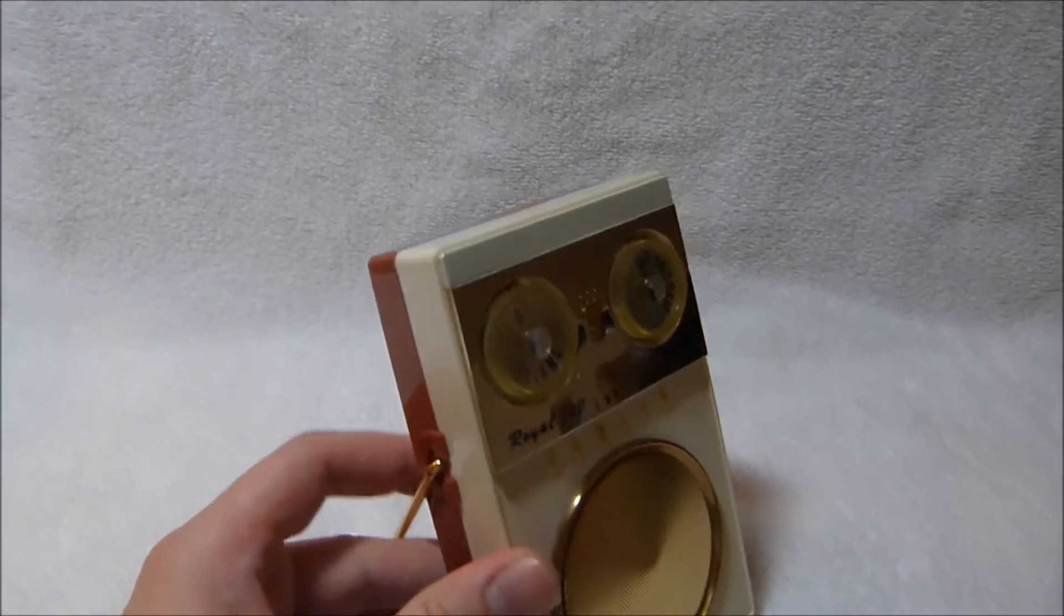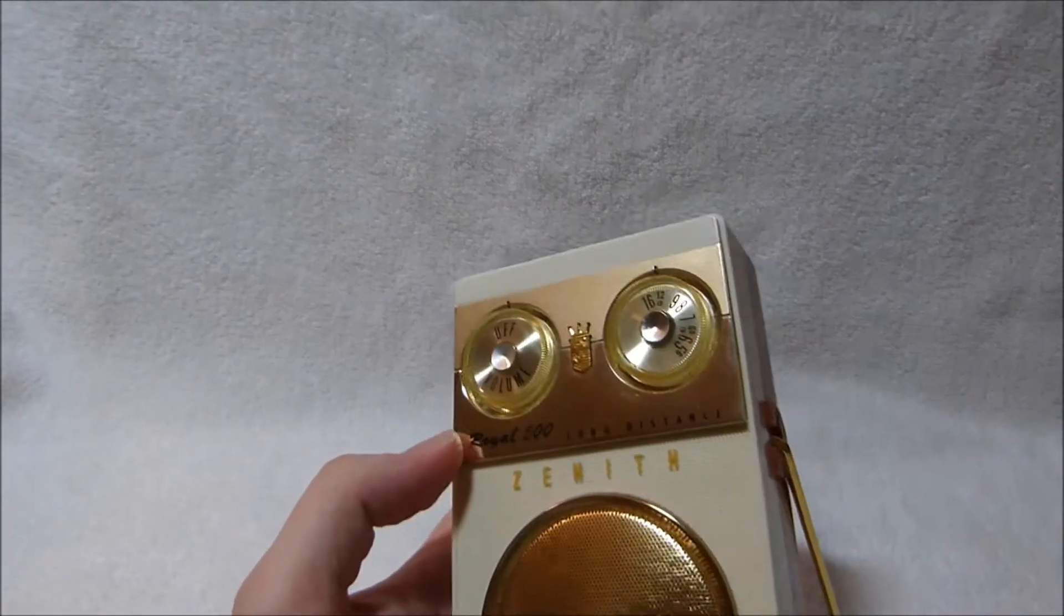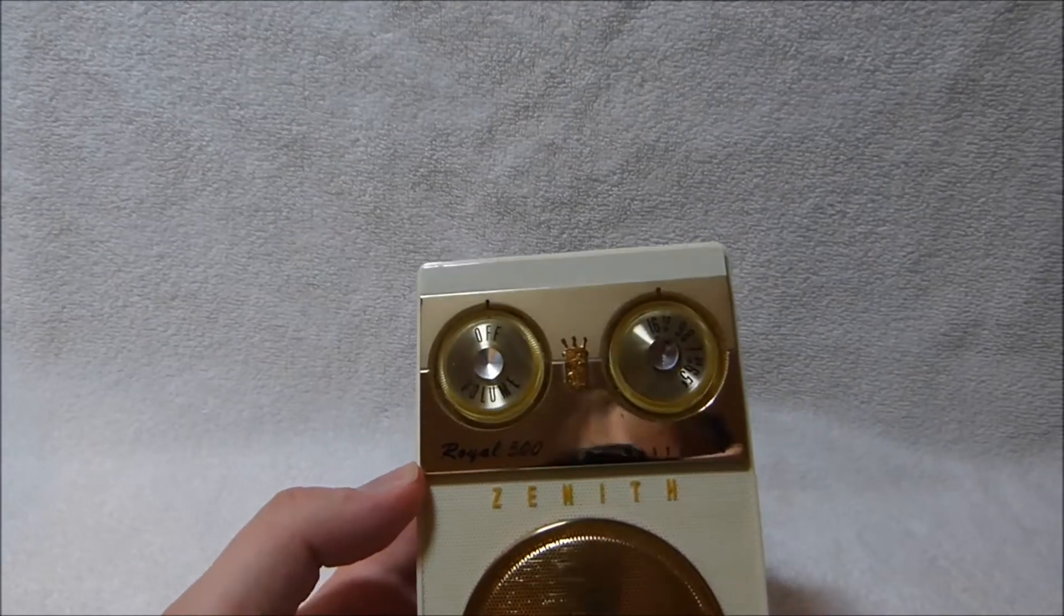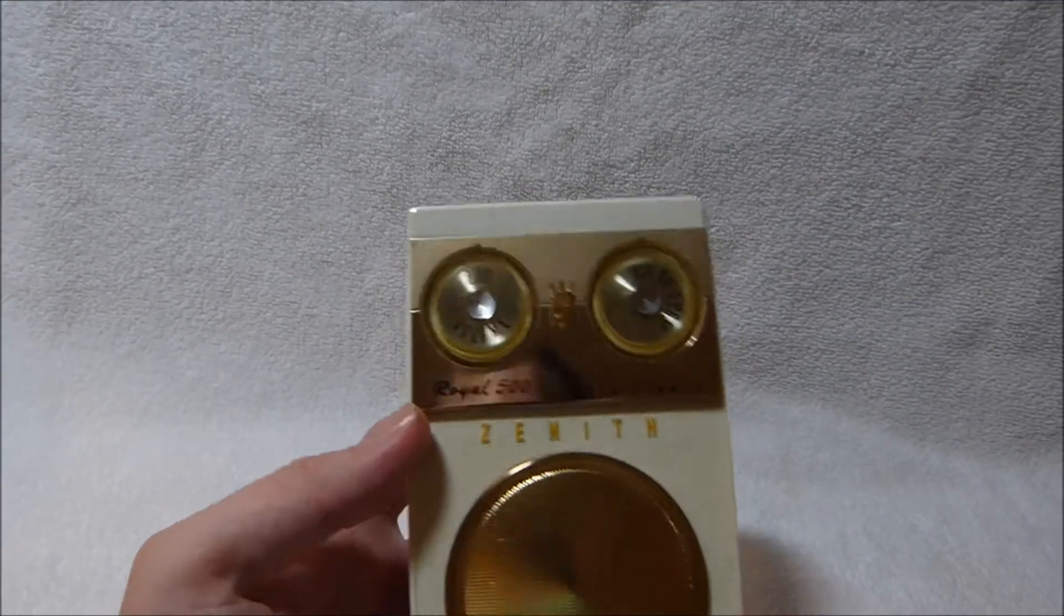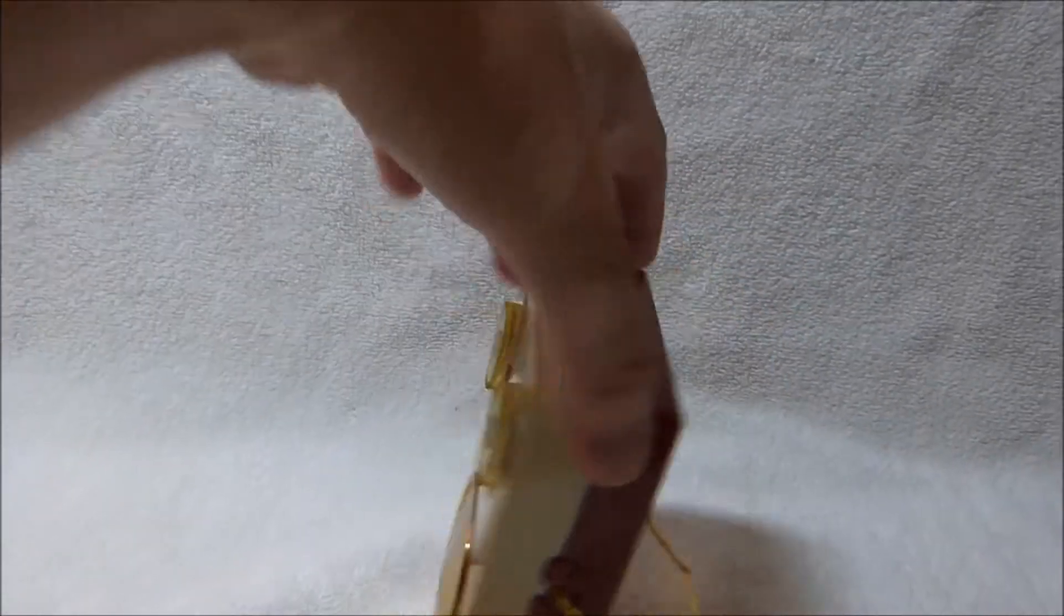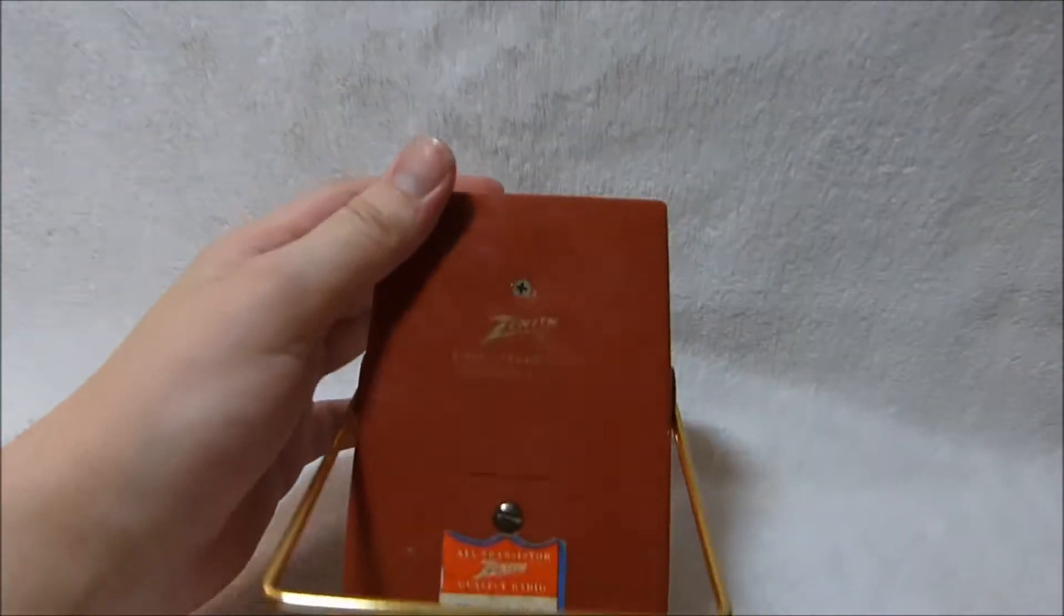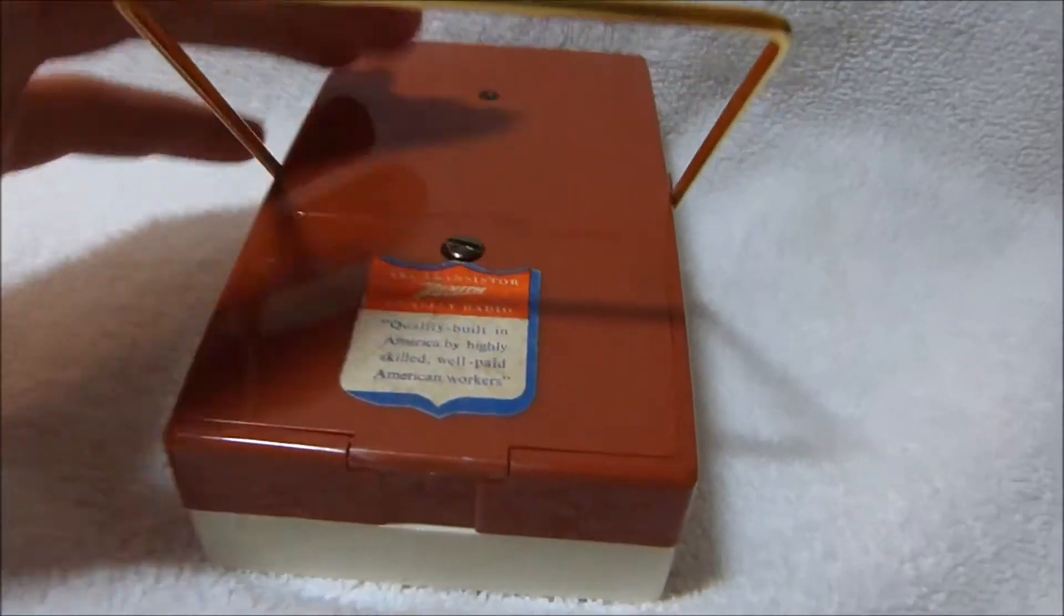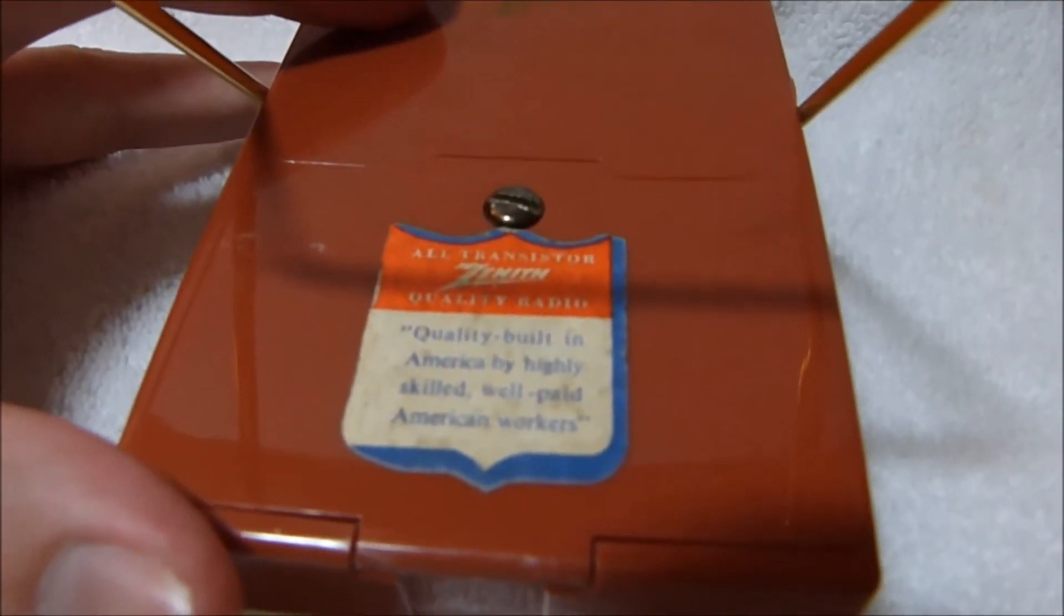This attractive and shiny coat pocket size radio is the Zenith Royal 500E from around 1959. It was Zenith's top of the line pocket size radio for that year.